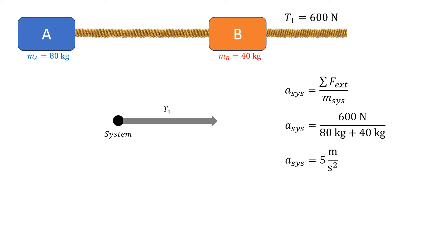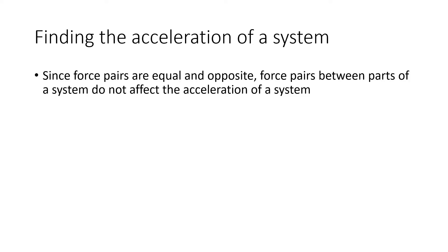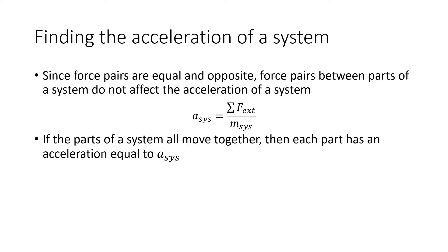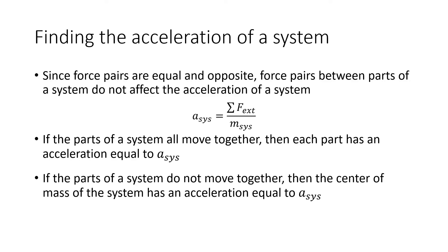So by treating them as a system, we're just doing Newton's second law again. So if you are dealing with a system, any force pairs within the system are not going to affect the acceleration of that system. And so we rewrite Newton's second law like that. The acceleration of a system is the net external force over the whole mass of the system. And then if all the parts of the system move together, every part of that system has an acceleration equal to that value, whatever you get for the system. If the parts do not move together, then the center of mass has that acceleration. Right now, we're just going to focus on that first condition where everything's tied together or they're in contact with each other, and they're moving as one unit.